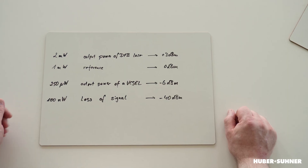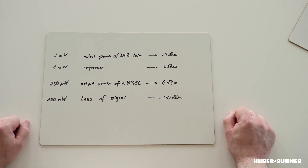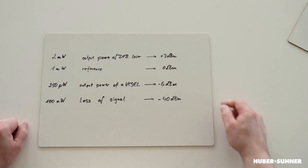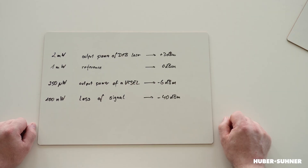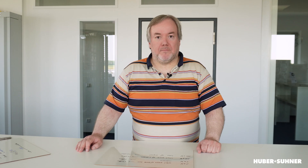This means the 2 milliwatts can be translated into, for example, 3 dBm. 1 milliwatt, the reference, is 0 dBm. And the 100 nanowatts we had, this is represented by minus 40 dBm.